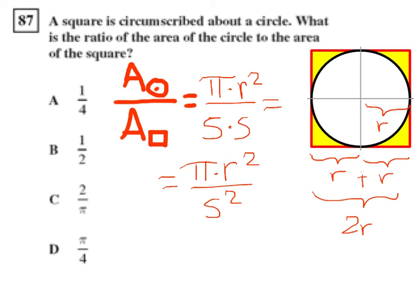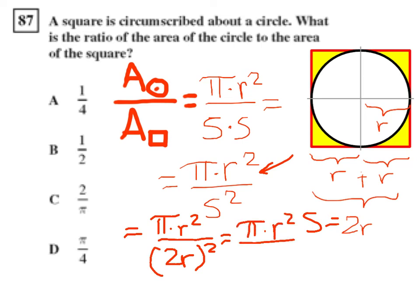But now we're going to substitute for side squared. We have a side is equal to two r. So our formula for the area of a circle is already ready to go. But let's finish with the formula for the area of a square. So we're going to keep pi times r squared on the top. On the bottom we're going to have two r in place of the s squared. So we have to square that entire quantity. So we're going to be left with pi times r squared on the top over two squared is four times r squared is r squared.